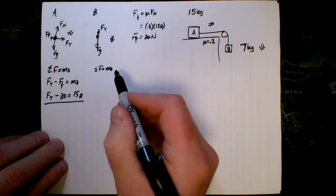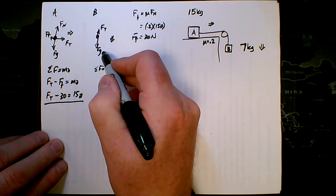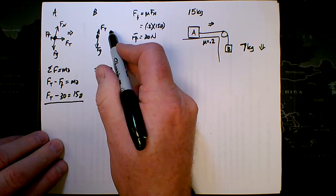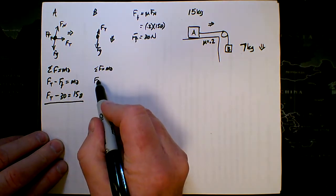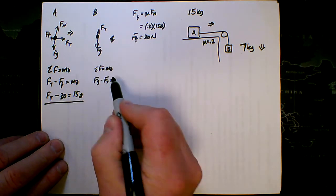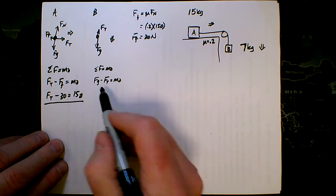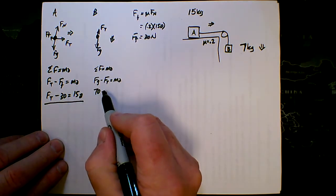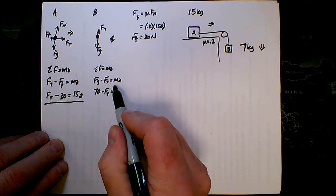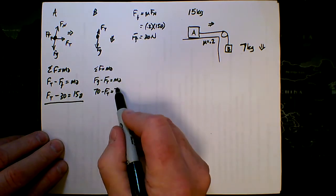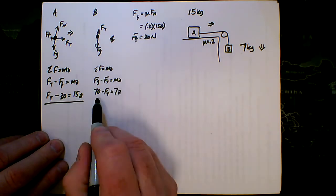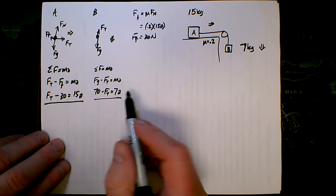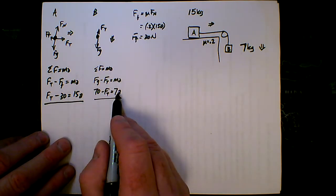Net force equals mass times acceleration. It's accelerating down, so my net force is going to be down minus up. That's Fg minus Ft equals Ma. Fg for this block, 7 kilograms, is 70 newtons, minus the tension, equals the mass of this block, which is 7, times the acceleration. Again, I get stuck, I've got tension and acceleration, two unknowns.